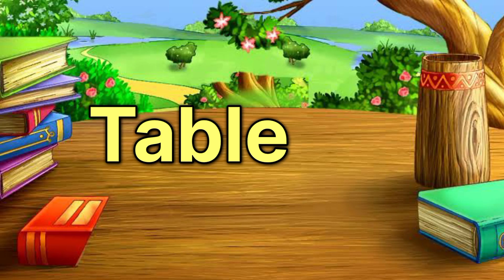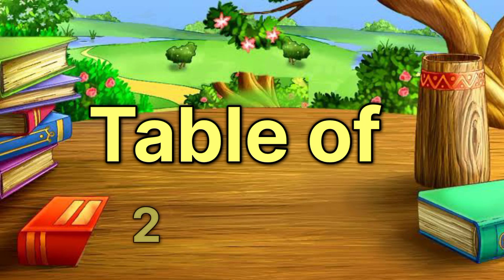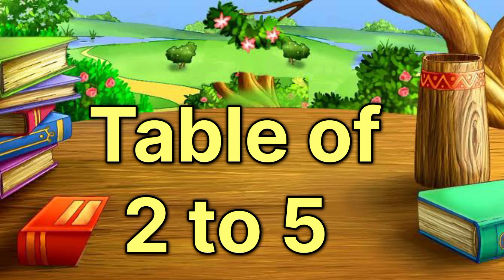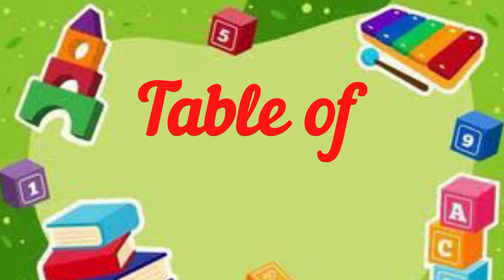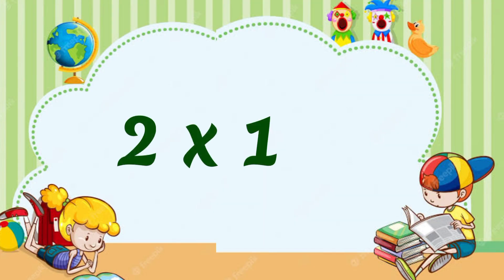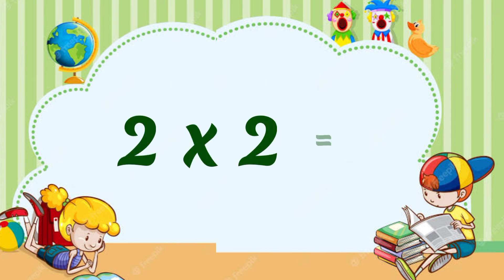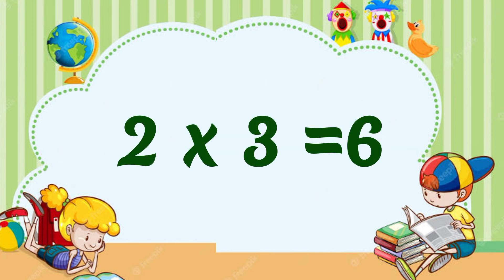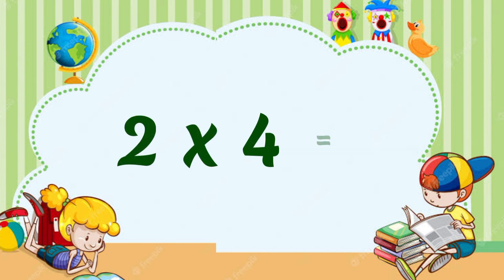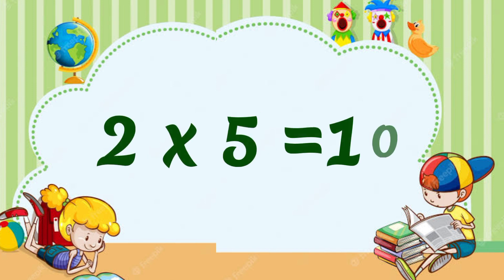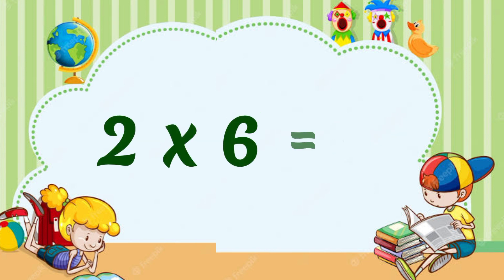Table of 2 to 5. Table of 2: 2 1's are 2, 2 2's are 4, 2 3's are 6, 2 4's are 8, 2 5's are 10, 2 6's are 12.